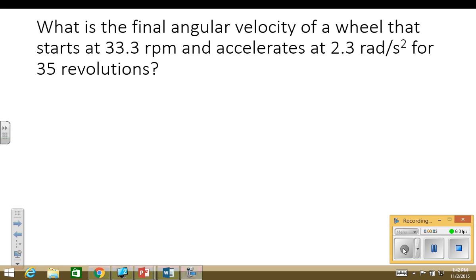Here's another problem that uses the equations of motion for rotary motion. In this one we're going to find the angular velocity of a wheel that starts at 33.3 RPM and accelerates at 2.3 radians per second squared for 35 revolutions.